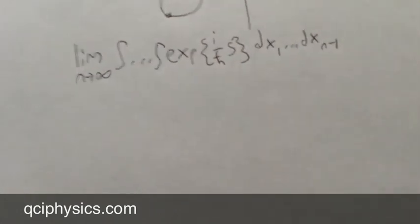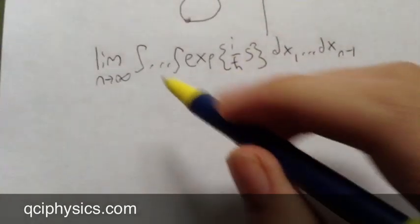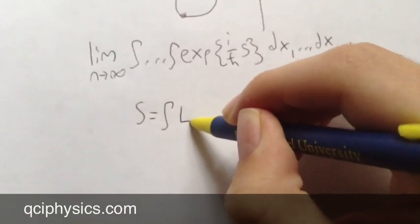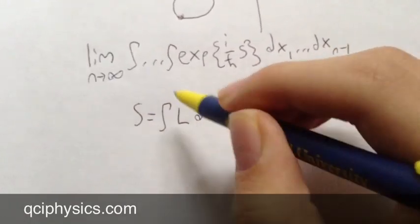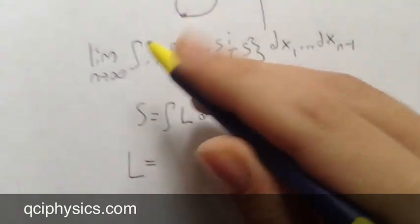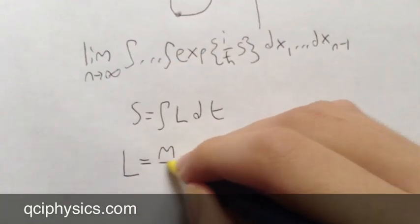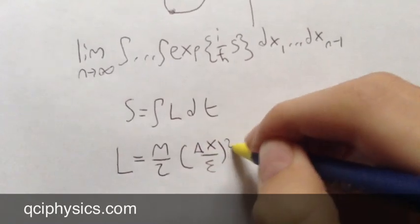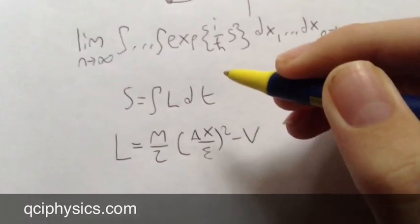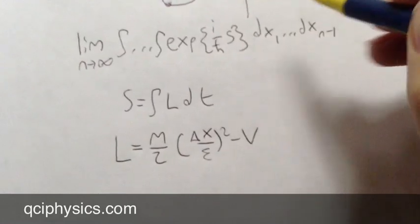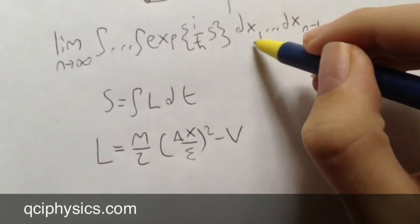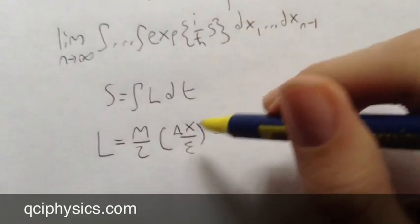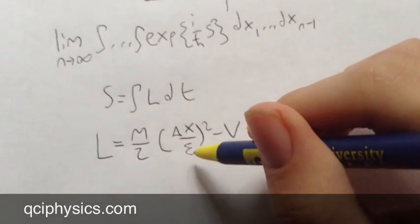Now, s, this is the key idea, is given by the integral of the Lagrangian over time. The Lagrangian for these discrete paths Feynman defines as m over 2 times delta x over epsilon squared minus v. V is the potential. Delta x is the difference in x values from x_j to x_j plus 1. And epsilon describes the size of our time slices.